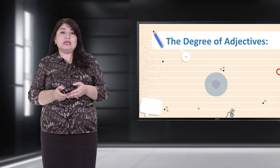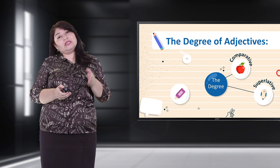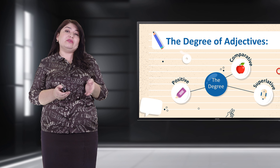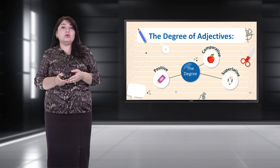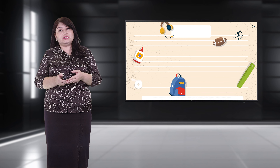There are three degrees of adjectives: positive, comparative, and superlative. These degrees are applicable only for descriptive adjectives. For example — positive degree: 'He's a good boy.' Comparative degree: 'He is better than the other boy.' Superlative degree: 'He is the best boy.'